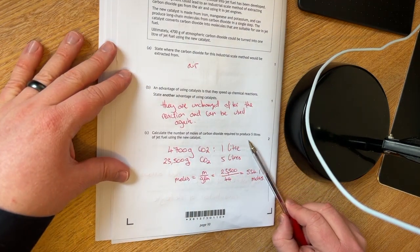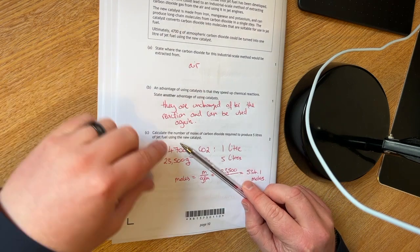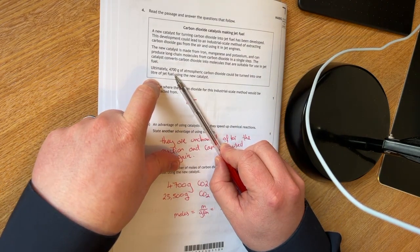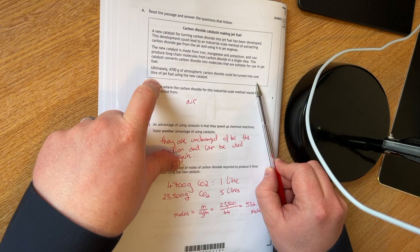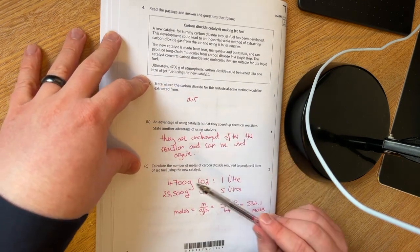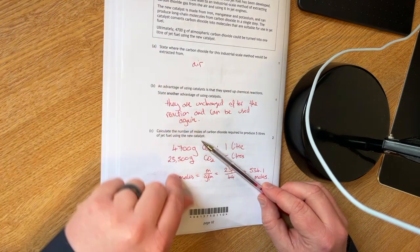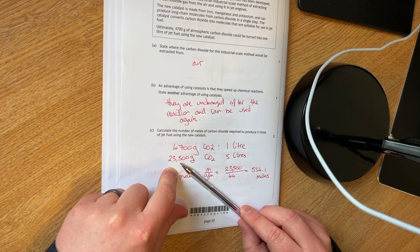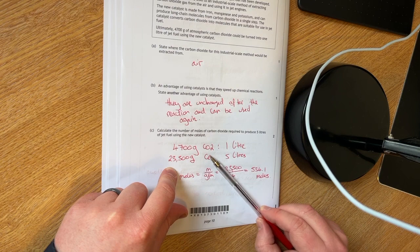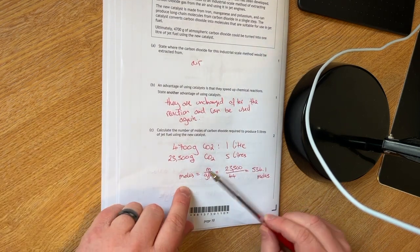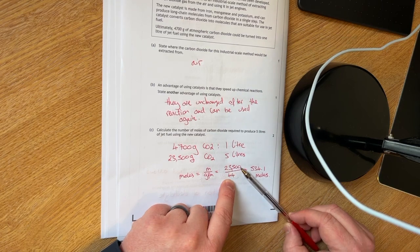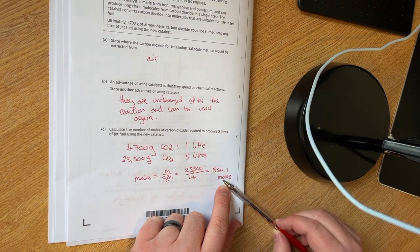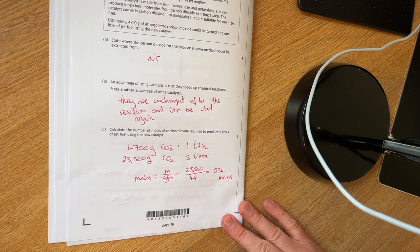You have to calculate the number of moles of carbon dioxide required to produce five liters of jet fuel using the new catalyst. They've told you 4,700 grams of atmospheric CO2 can be turned into one liter of jet fuel. So 4,700 grams of CO2 is one liter. So you would multiply that by five to give you 23,500 grams of CO2 in five liters. And then your number of moles is your mass over your GFM. So 23,500 over 44, which is 534.1 moles.